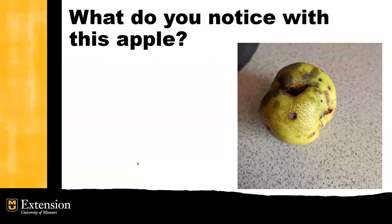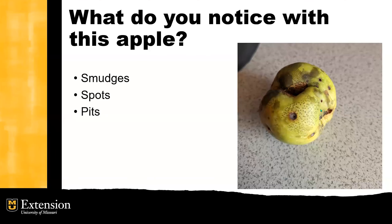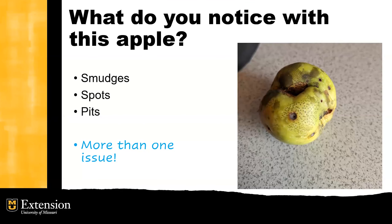Take a look at this apple that you see here. The thing that the homeowner was curious about were these black spots and these smudges that you also see. They saw smudges, they saw spots, and then they also saw these pits that could be caused from an insect. So with this apple, there are actually more than one thing that's kind of working on this fruit.